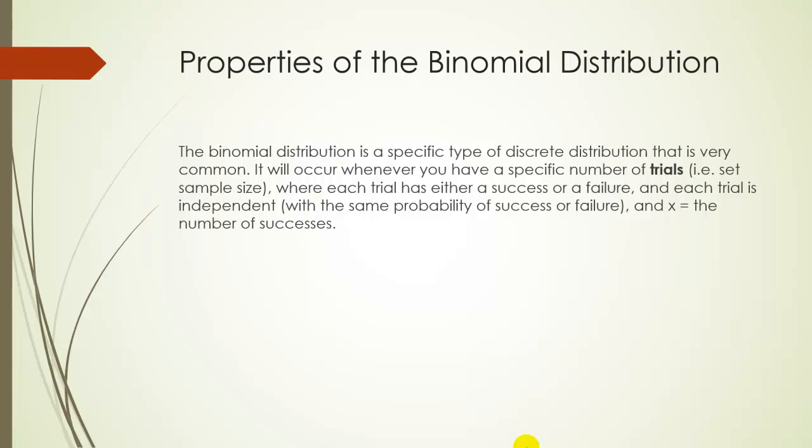And then each trial is independent. In other words, if I get three heads in a row, it's not going to change the probability of me getting heads or tails on the next throw. And then ultimately our variable is counting the number of successes. So if I'm counting the number of heads, a success would be a head, and I'm counting the number of heads, the number of successes.